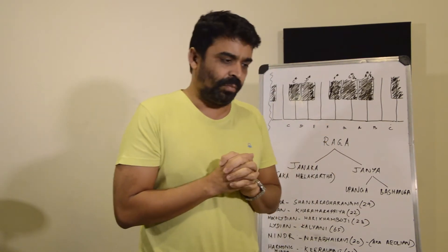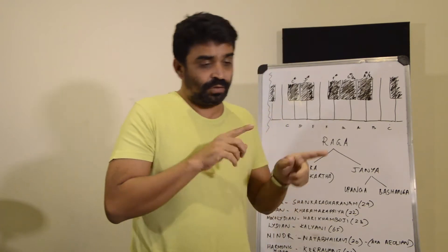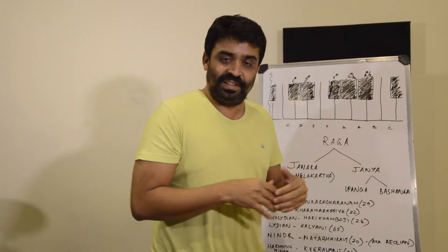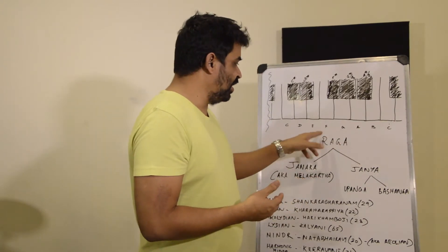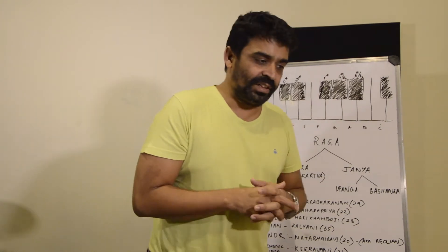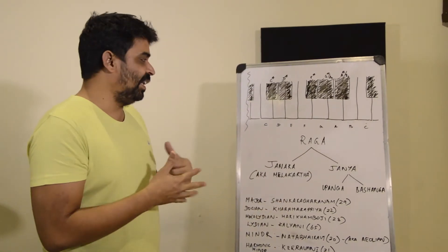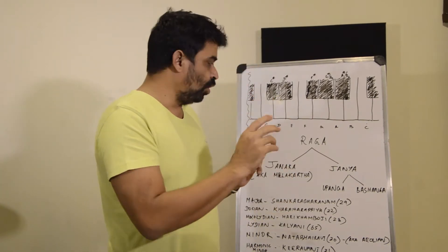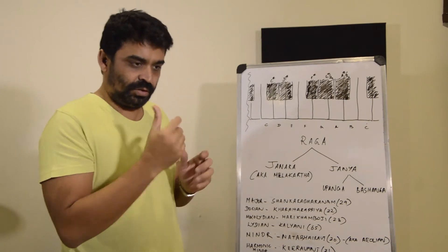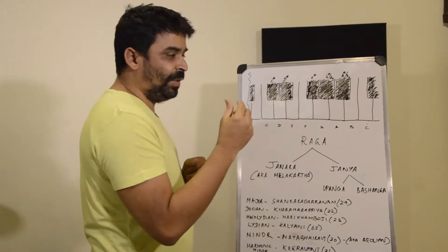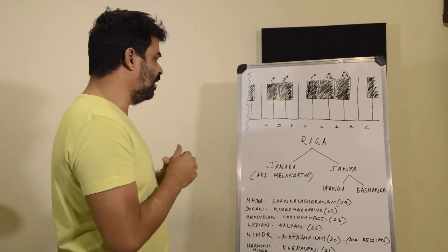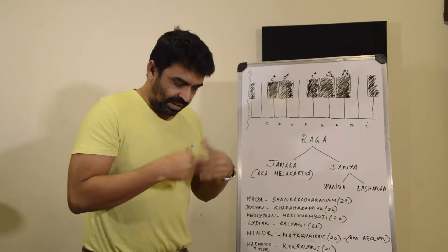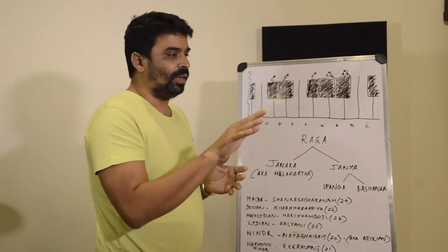A raga is not only the set of notes — it also specifies which of these notes are more important than others. You might say this raga comprises C D E F G A B C, and then note that certain notes are very important. There is an ascent and descent — arohanam and avrohanam — that defines the pitch classes making up the raga, which notes are more important, and how each swaram has to be approached.